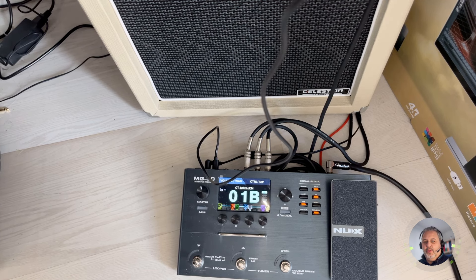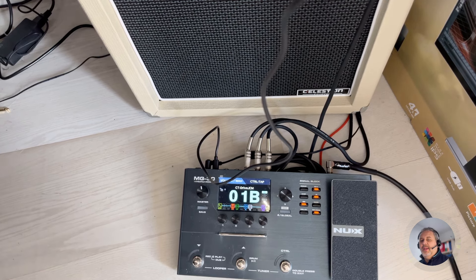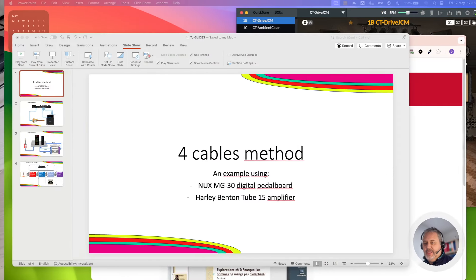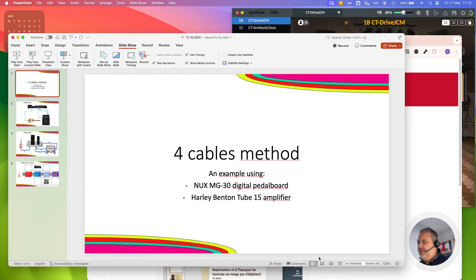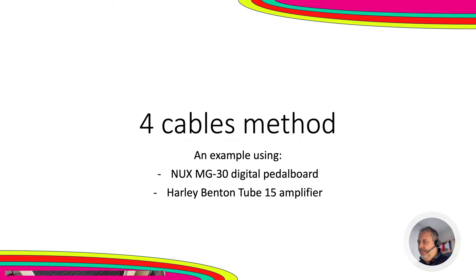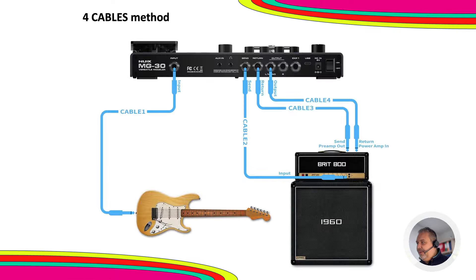To help you better understand the structure and logic of the four-cable method, I prepared a small presentation. The example uses the NUX MG30 digital pedal board and the Harley Benton Tube 15 amplifier. As the name suggests, the four-cable method uses four cables — all standard mono guitar cables.